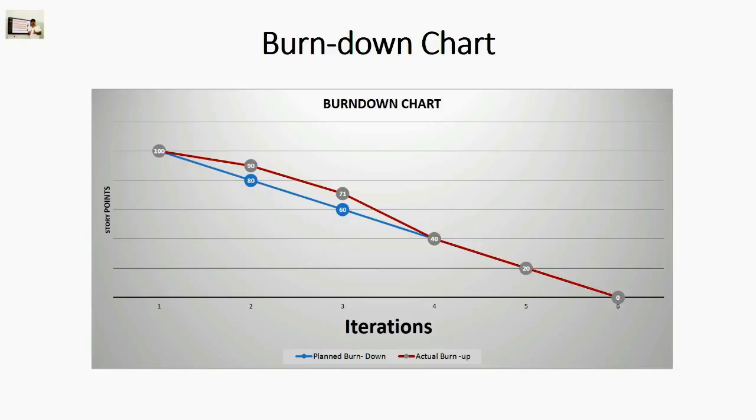Now let's have a quick look at the actual burn down. The actual burn down is represented by line red in color. You might have noticed that during the first two iterations, the actual burn down was less as compared to the planned burn down, which indicates that we were lagging behind the plan during the first two iterations.